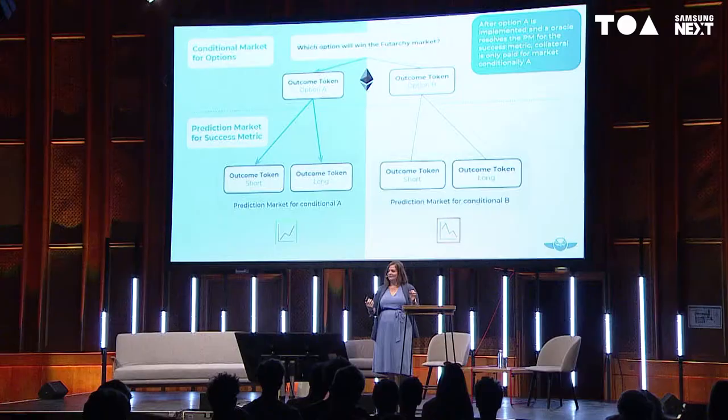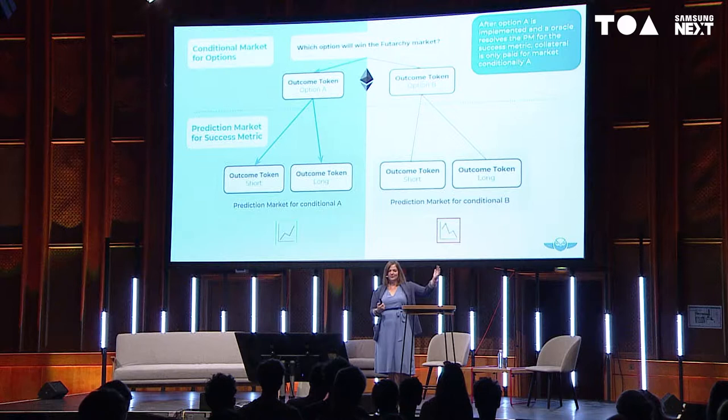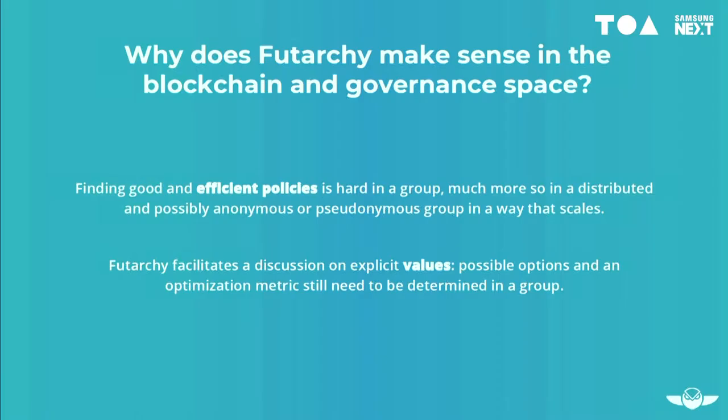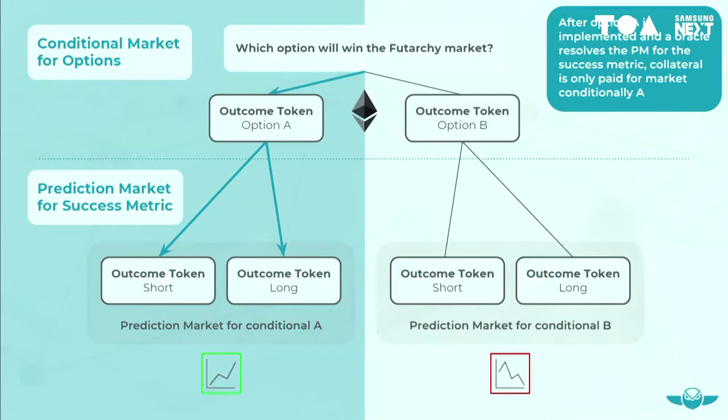One option actually performs better, so it's selected. The CEO is fired in this example and the collateral is paid out for market A conditional — the thing that actually happens. If you said the revenue is going to go up, you make money; if you said it's going to go down, you lose money depending on what actually happens after six months. The other half of the tree just gets refunded.